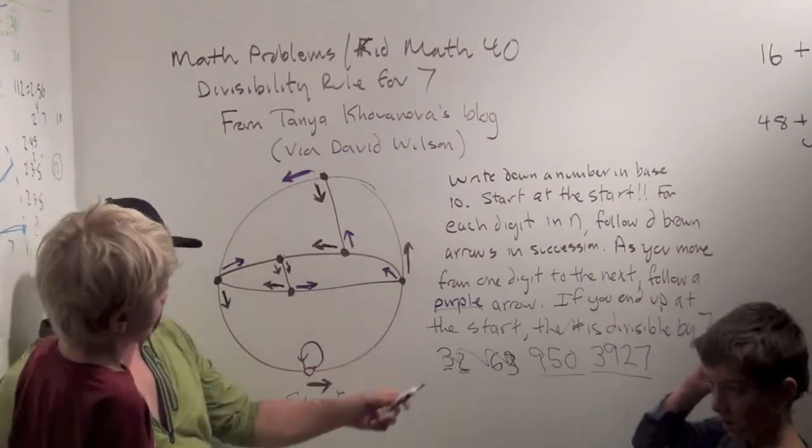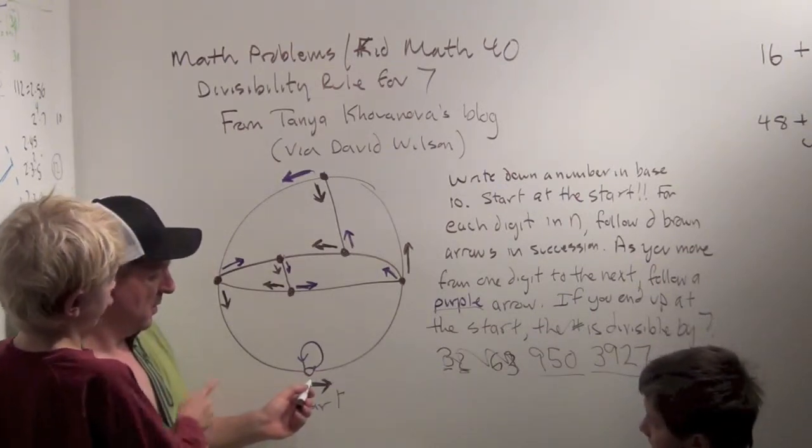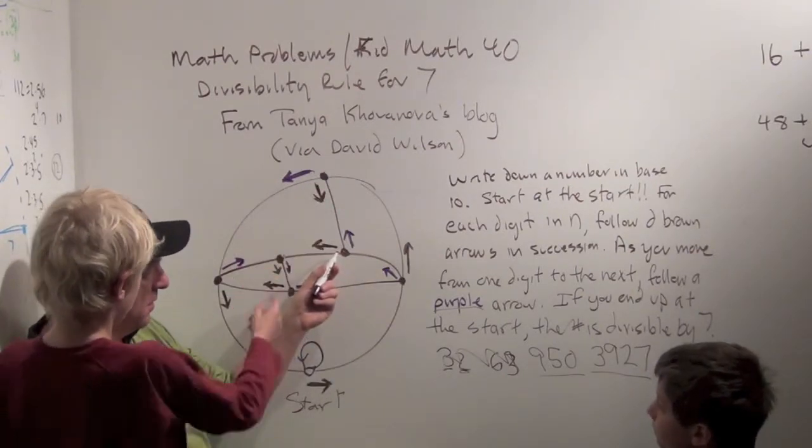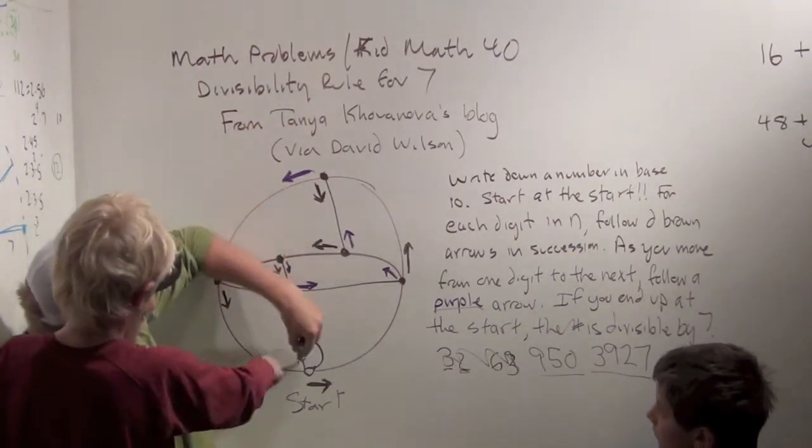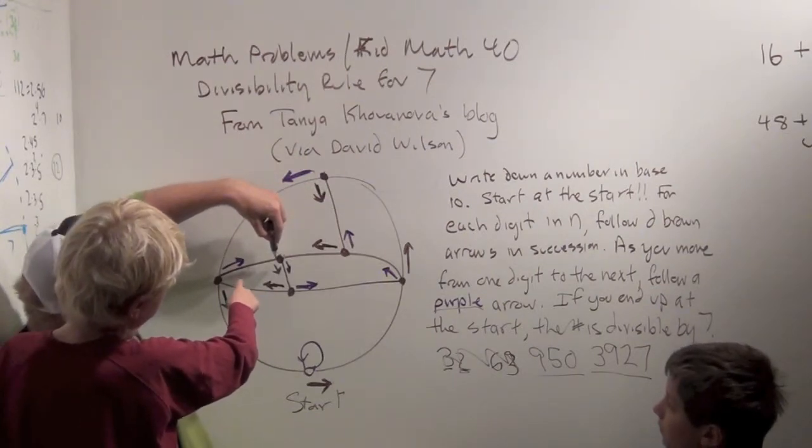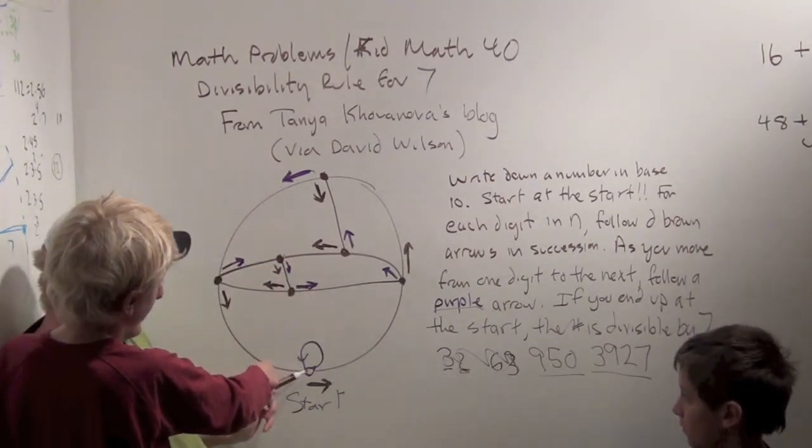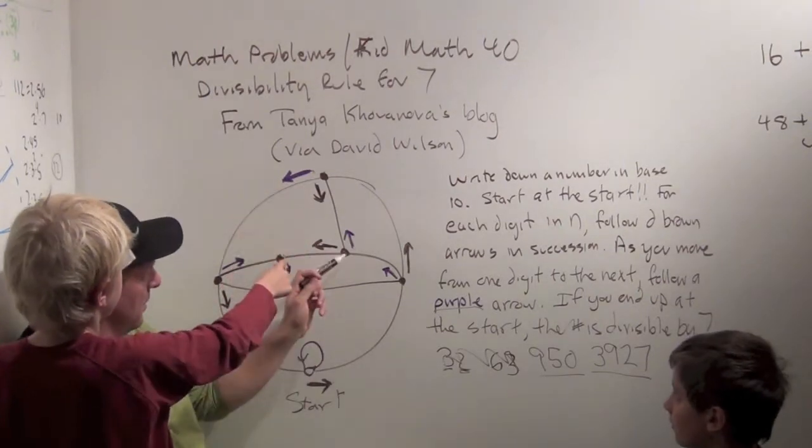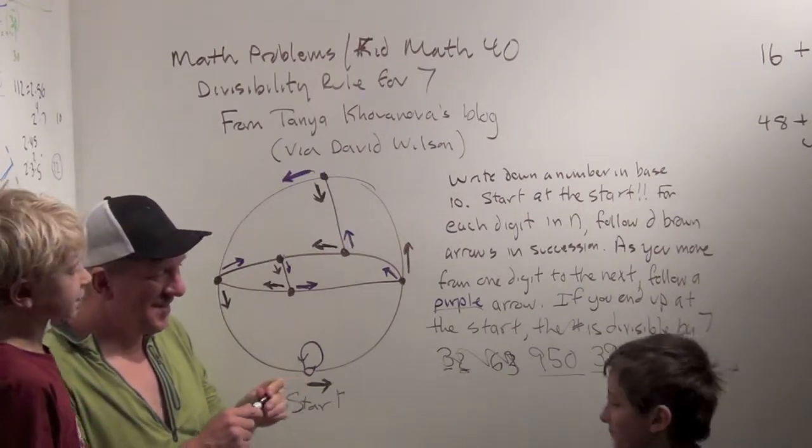Alright. Now we'll do three, nine, two, seven. Okay? I'll try that. Alright. So, we go three first. One, two, three. And then purple arrow up. Nine. One, two, three, four, five, six, seven, eight, nine. Purple arrow. Down. Two, one, two. Purple arrow. Loop. And then seven, one, two, three, four, five, six, seven. Hey! That was divisible by seven. That is divisible by seven. Isn't this cool? Yeah.